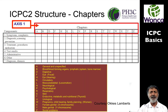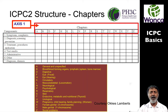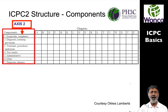In the first axis you've got the chapters: A for general, Z for social problems, and all in between for different body parts or body systems — D for digestive, K for circulatory, N for neurological, etc. Then you've got axis two, which is the components part, and there are seven of them.